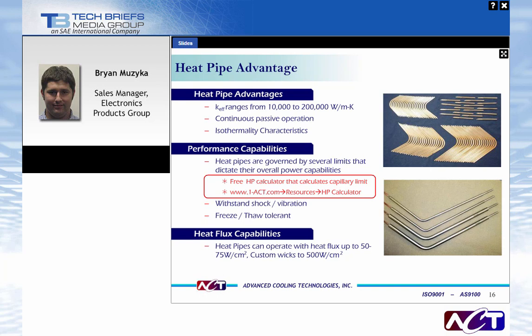A heat pipe will typically have somewhere between a two to five degree temperature difference across its length, which at pretty much any length gives you increased performance over a bulk metal. The big advantages of a heat pipe are effective thermal conductivity — ranging anywhere from 10,000 W/mK for a short six-inch pipe to 200,000 W/mK for longer pipes used in satellite systems. They're passive, so no additional power or cost is added to your system. And they provide good isothermality, keeping things at very constant temperatures.